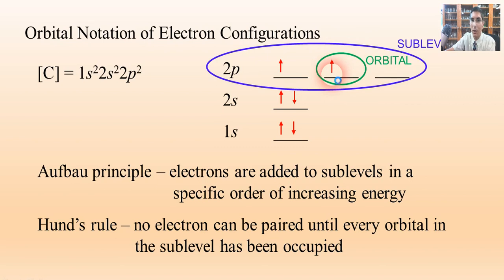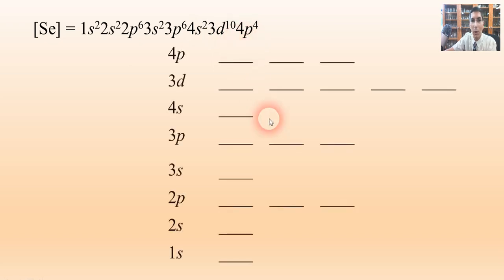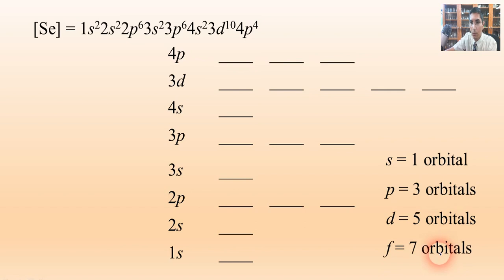Now let's try another one. Let's try one that's a little bit more complex. We'll try selenium this time, and here's the electron configuration for that. It ends with 4s2, 3d10, 4p4. So this time we have quite a few more sublevels to add in here, and so we're going to start with 1s. Before I do that, I should let you know that s will always have one orbital, p has three, and this is the first time we have a d, and so it has five orbitals. If we ever get to f, it will have seven orbitals. It always goes with the odd numbers, 1, 3, 5, 7, s, p, d, and f.